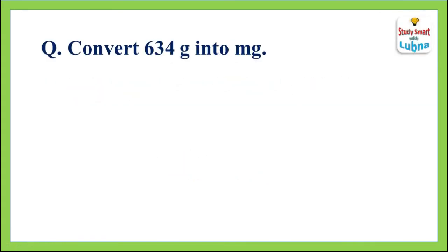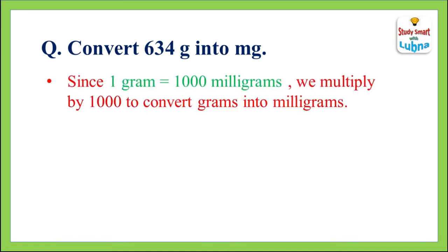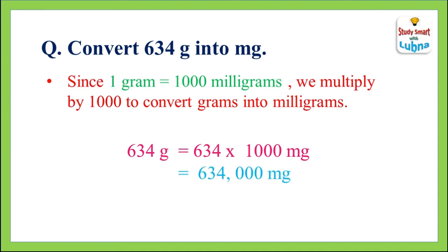Convert 634 grams into milligrams. Since 1 gram is equal to 1,000 milligrams, we will multiply 634 by 1,000. After multiplying, we will get 634,000 milligrams. So 634 grams is equal to 634,000 milligrams.